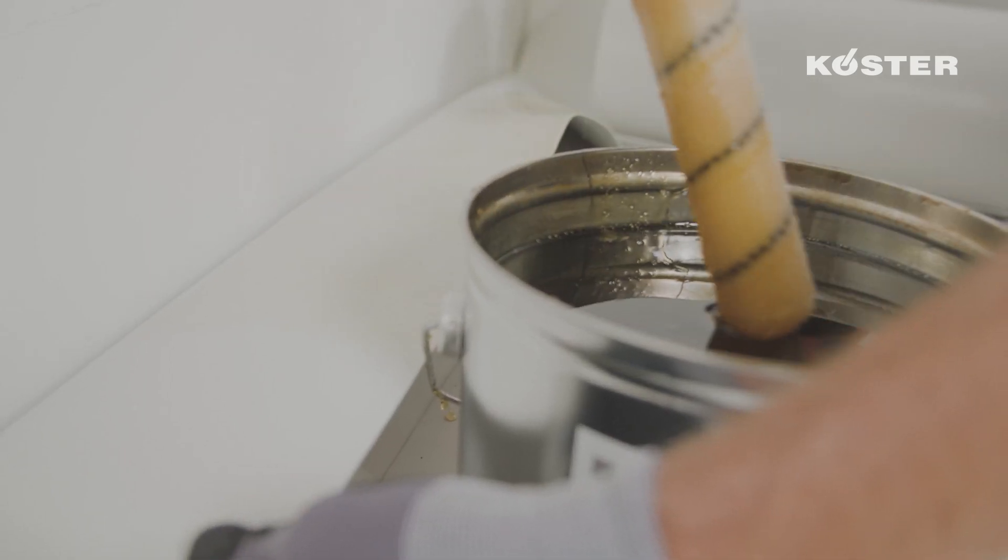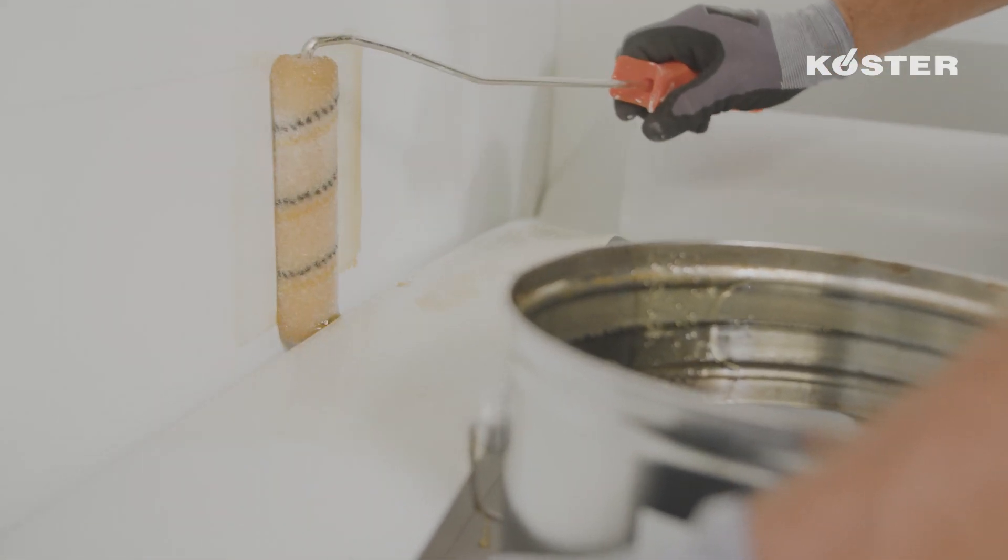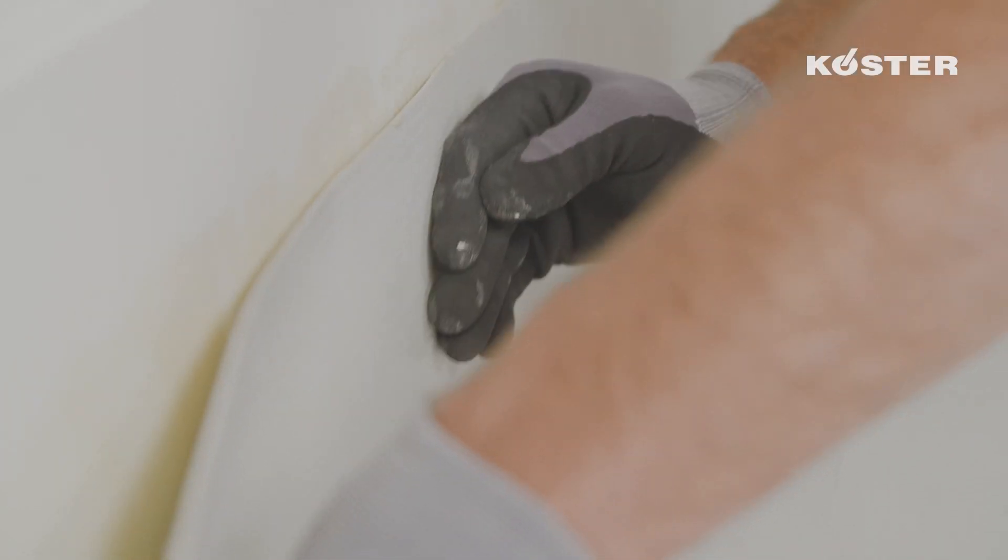Stir the one component material before use. The adhesive is applied thinly to both surfaces with a roller or brush and allowed to dry. The membrane is then simply pressed on.